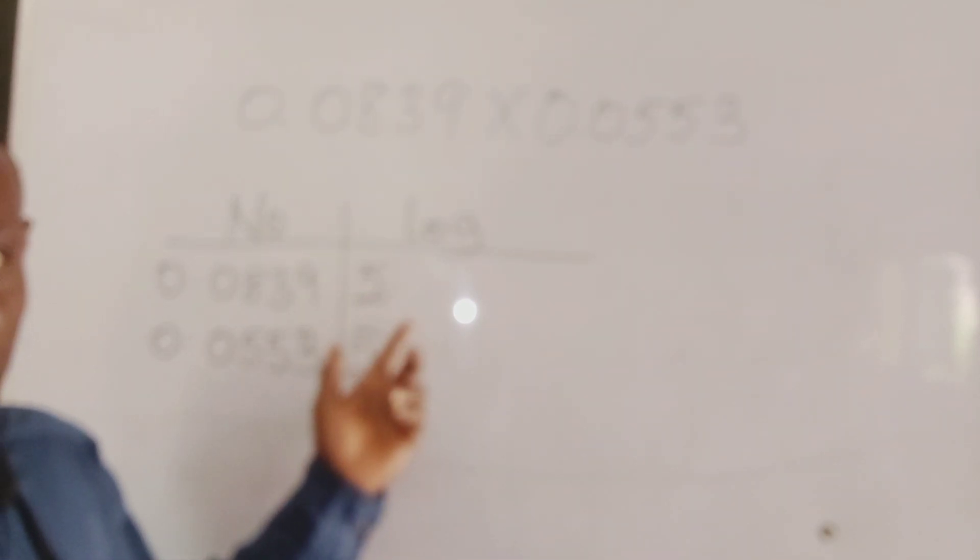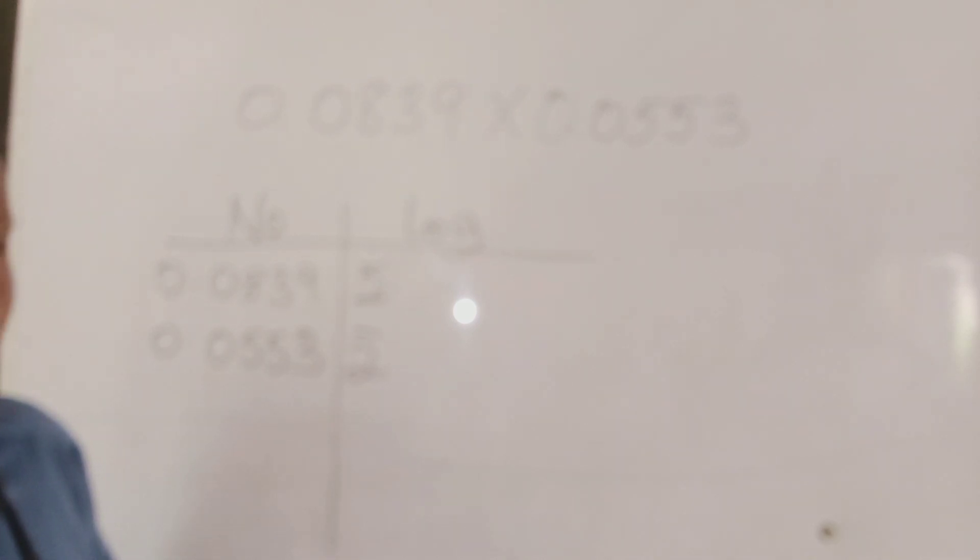Here the characteristics is also 2 bar or negative 2. Whatever you choose, it's okay. 2 bar or minus 2.